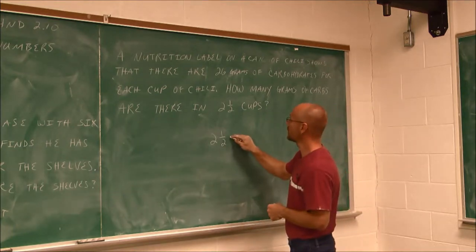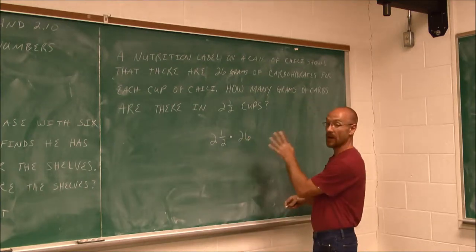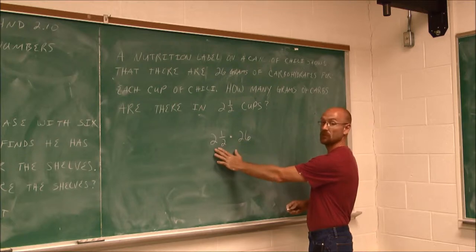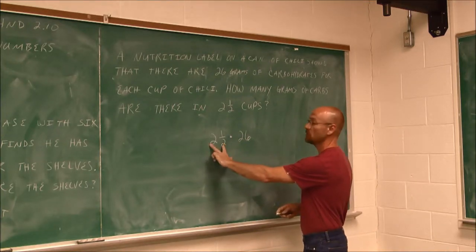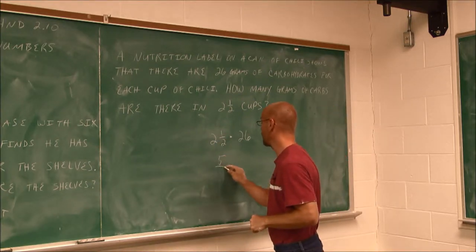We're going to multiply this mixed number by 26 grams of carbohydrates. So now we have multiplication of a mixed number. So we're going to write it as an improper fraction. 2 times 2 is 4, plus 1 is 5 halves.